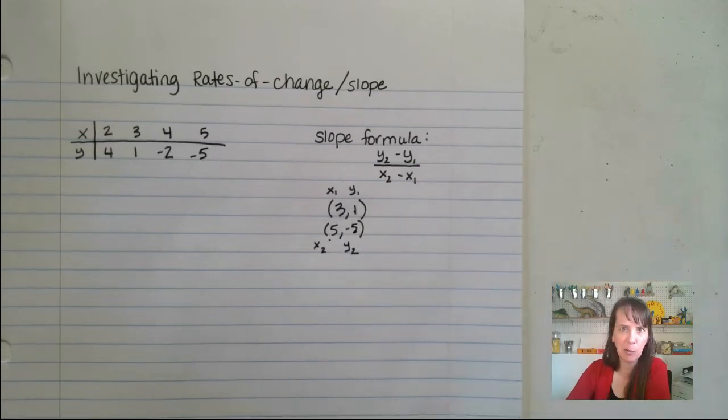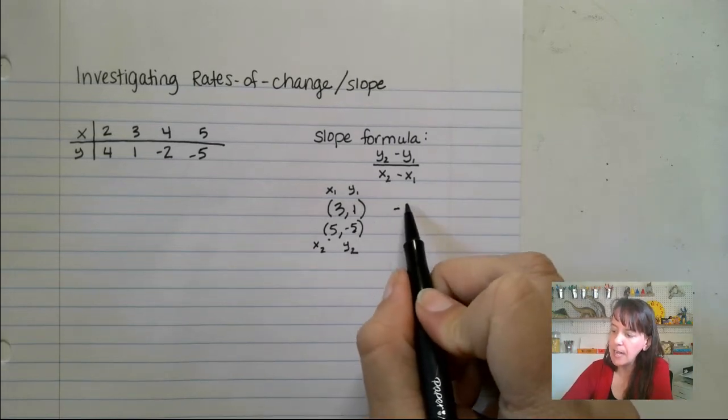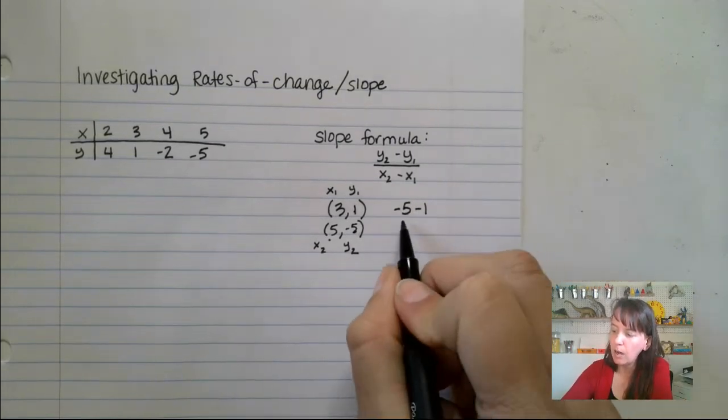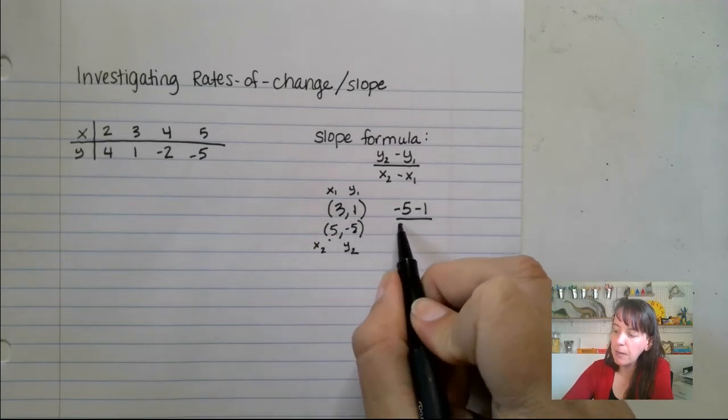When it's stacked, for whatever reason, that seems to make it a little bit easier for me to see. So again, that's going to be -5 minus 1 over 5 minus 3.